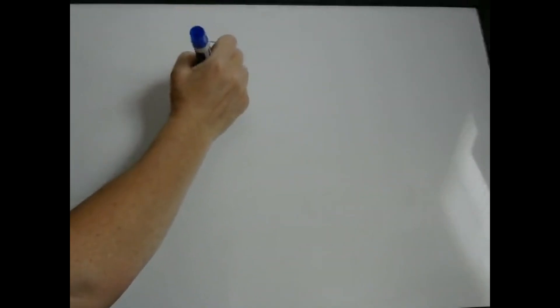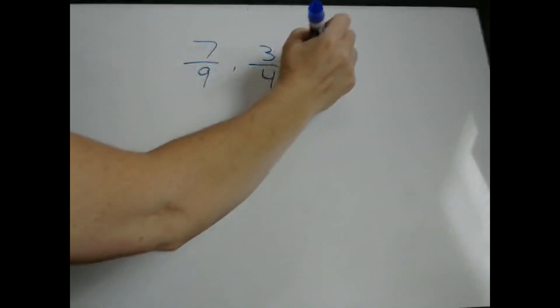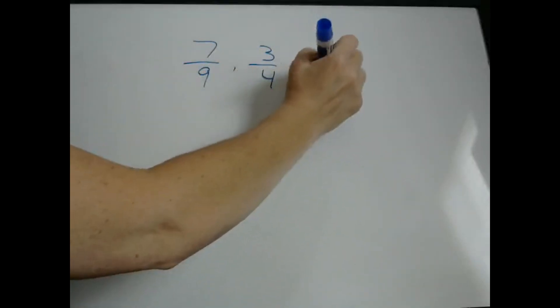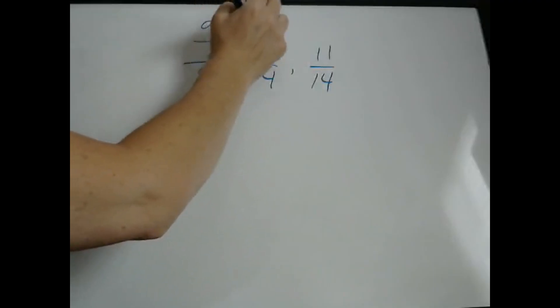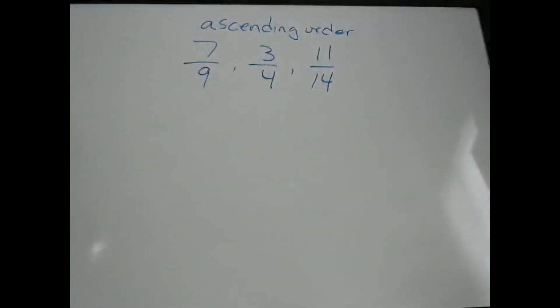Here we're going to talk about comparing fractions and I'm going to show you two types of questions that you might see on the test that you can use this technique for. The first type of question is they may give you three fractions and ask you to put them in ascending order. Ascending order means from the least to the greatest, so we need to figure out which one is the smallest and which is the greatest and then put them in that order.